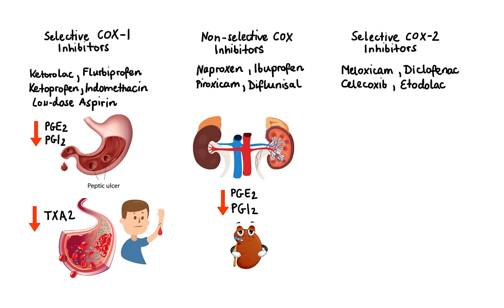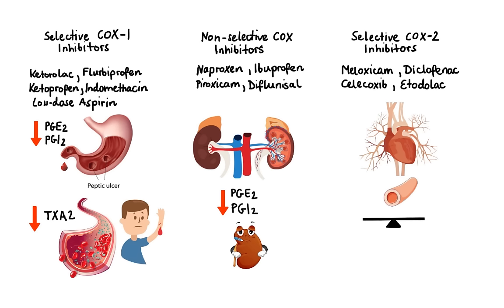The last major adverse effect of NSAIDs results from their actions on the cardiovascular system. While agents such as aspirin with high COX-1 selectivity can have a protective cardiovascular effect due to antiplatelet properties, agents with high COX-2 selectivity can have the opposite effect. Under normal conditions, we have a balanced effect between prostacyclin and thromboxane A2.